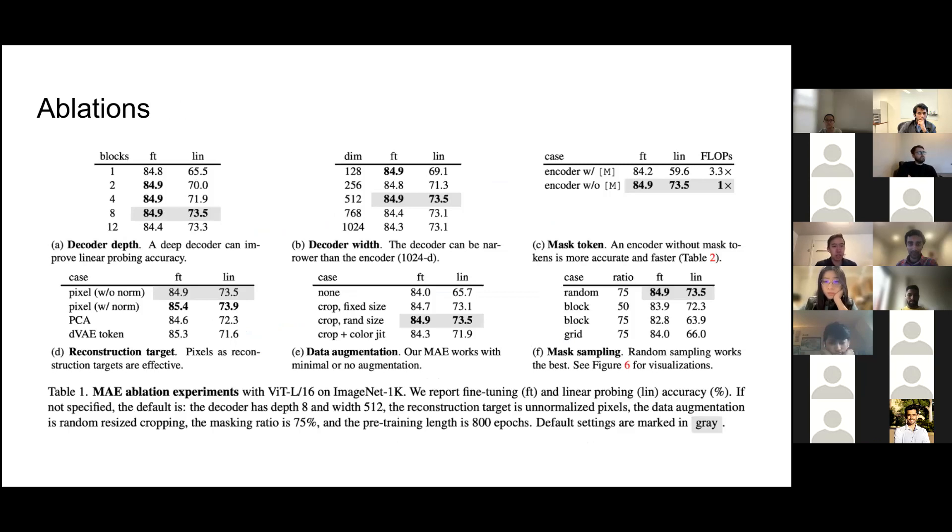The authors go through a series of ablations. First, they look at decoder depth. For end-to-end fine-tuning, decoder depth doesn't make too much difference. But on linear probing, you actually need a pretty deep decoder to get better accuracy. One explanation the authors give is that there's a gap between the pixel reconstruction task in pre-training and the recognition task later on. The last several layers in an autoencoder are more specialized for reconstruction but less relevant for recognition. So a reasonably deep decoder can account for the reconstruction specialization and leave those latent representations at a more abstract level in the encoder.